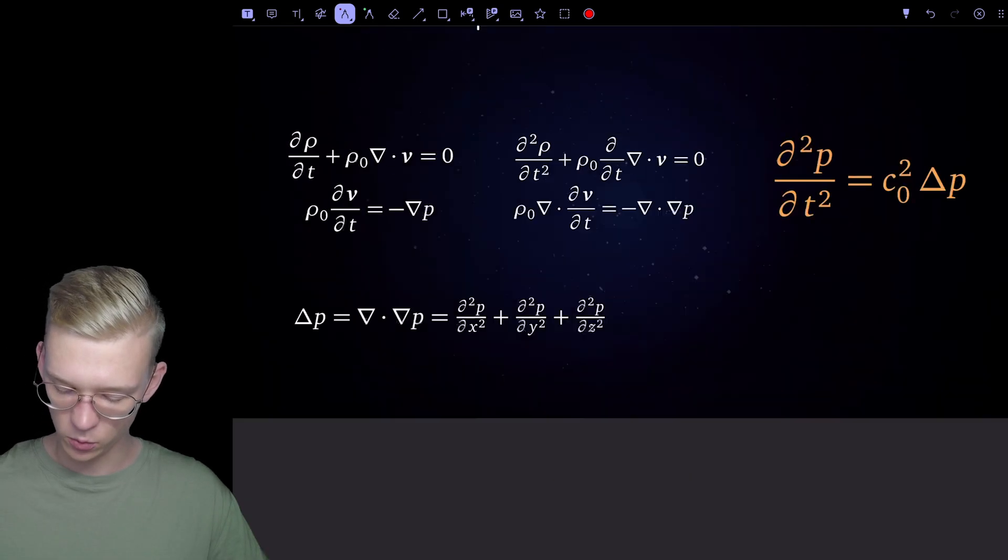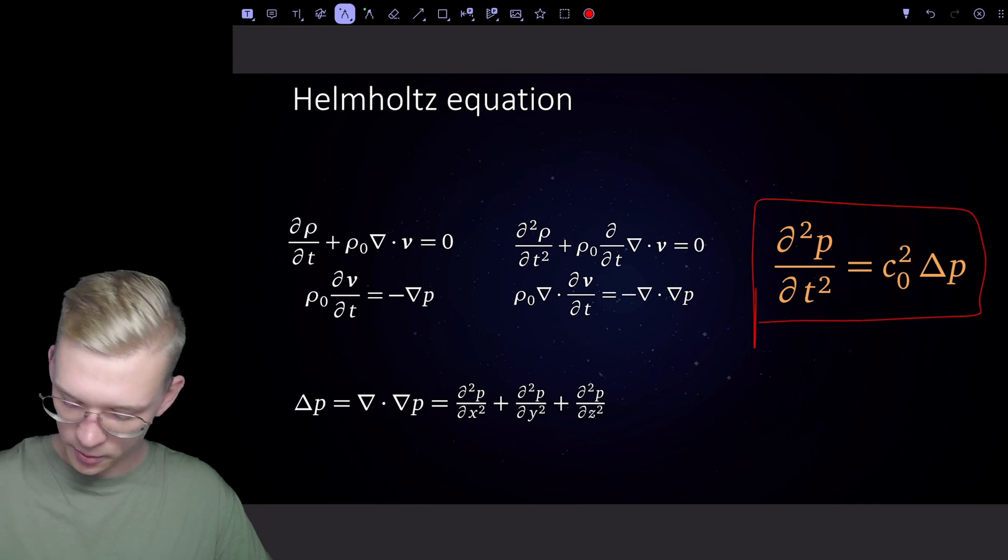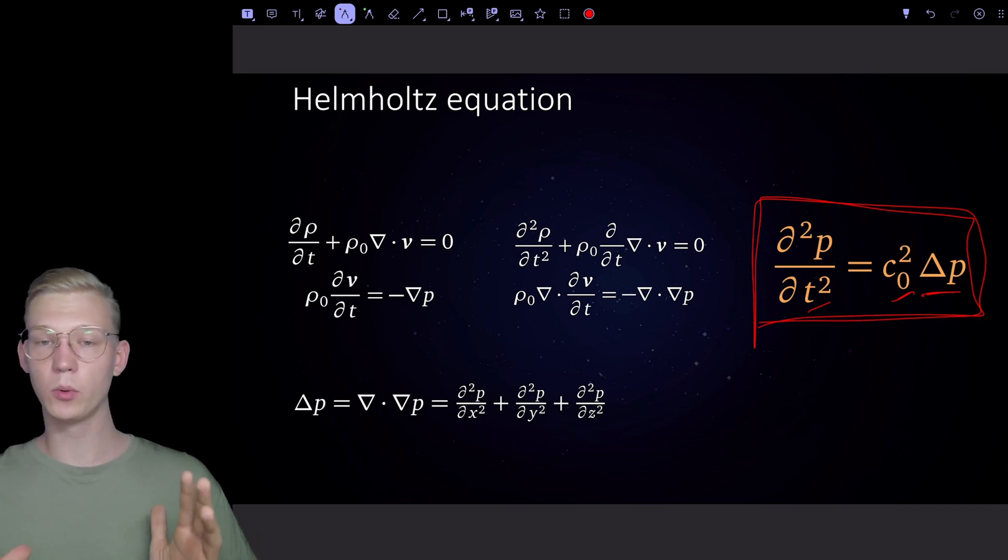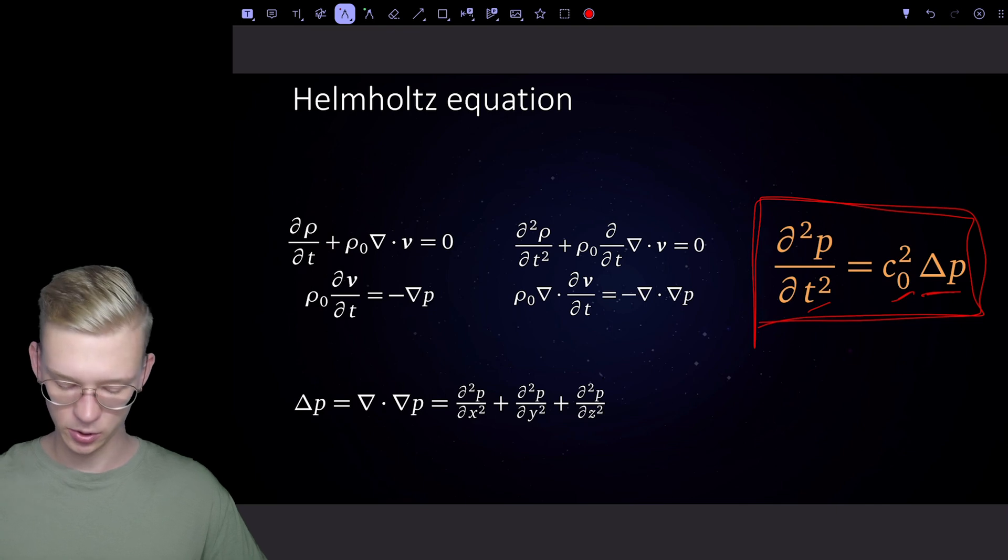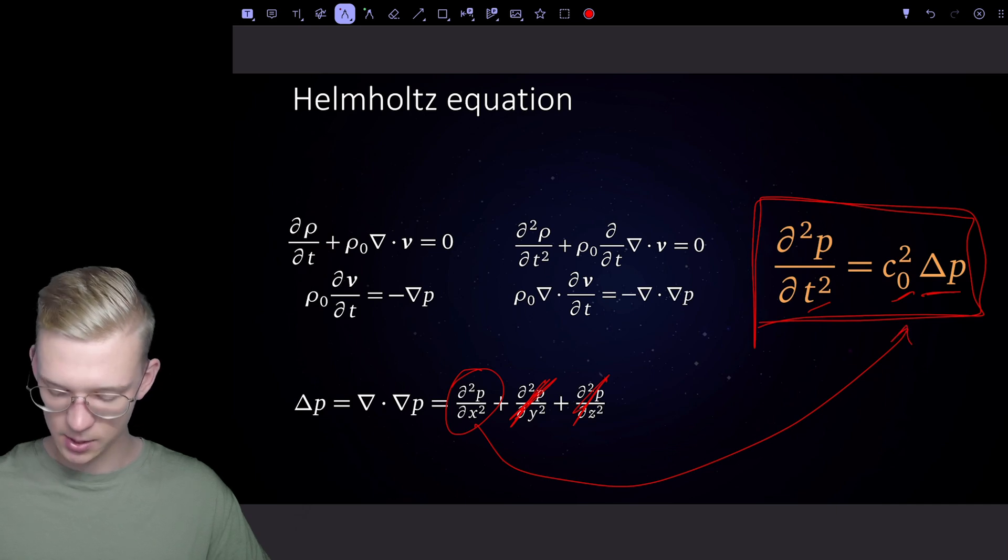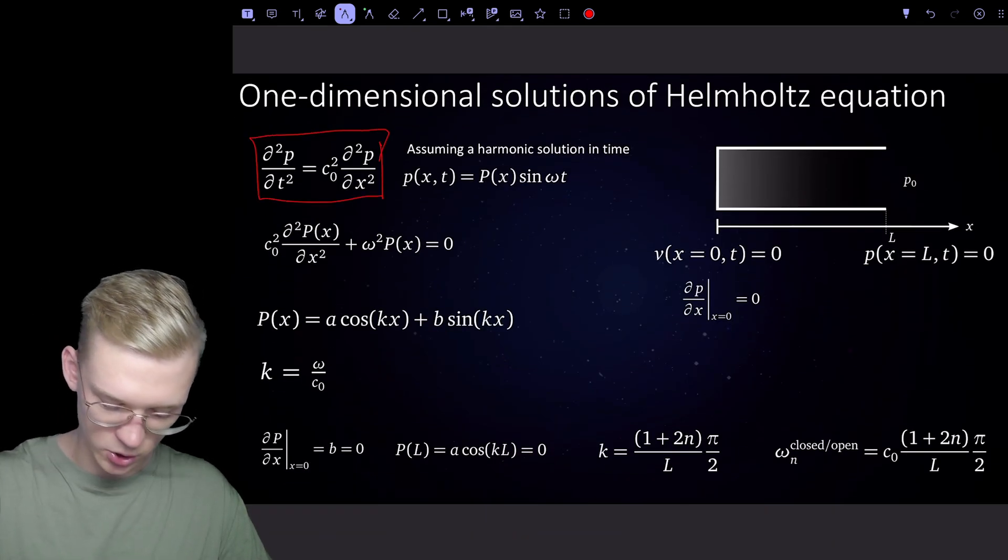Let's jump back and look at our Helmholtz equation. We have a derivative in time twice, is equal to our speed of sound times a double derivative of our pressure. For now we will only talk about the one-dimensional solution, so we have no y and no z. This is our solution that we can insert right here and we will get this equation.